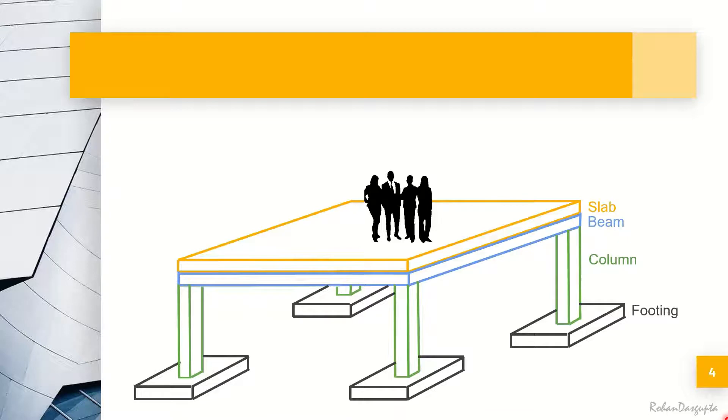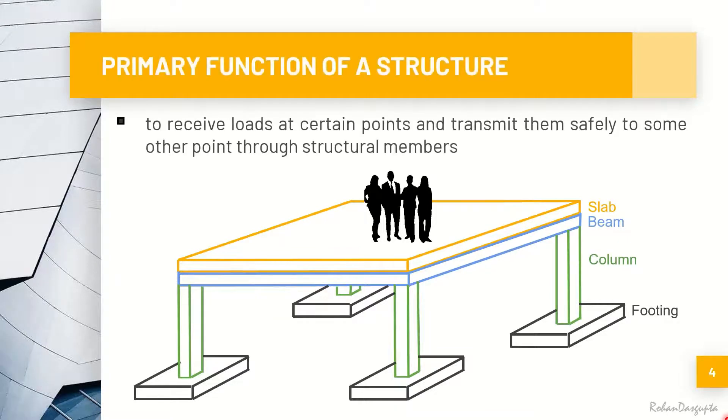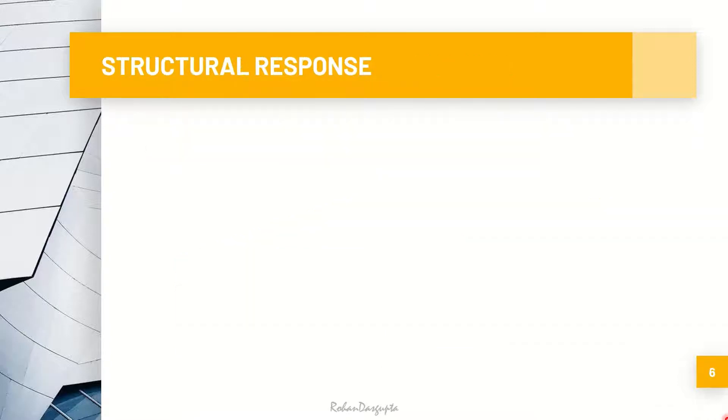If you think about the primary function of a structure, it is basically to receive loads at certain points and to transmit them safely to some other point through the structural members. In this case, the structural members are the slabs, the beams, the columns and the footings.